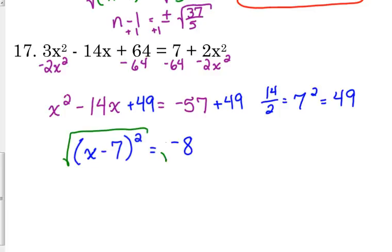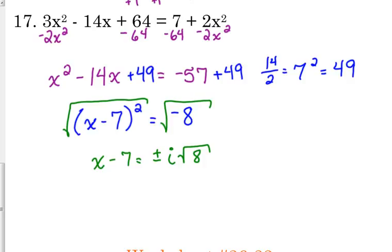Square root both sides. We get x minus 7 is equal to what happens when we have a negative under the square root? It comes out as i. 8 is not a perfect square, so 8 stays under. The negative comes out as i. And then we add 7 to both sides. So x is equal to 7 plus or minus i square root of 8.